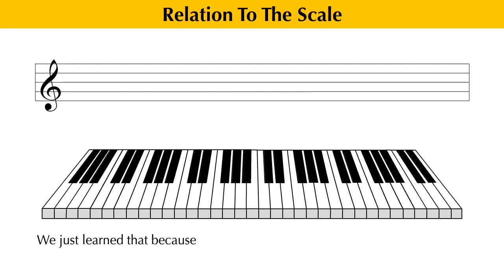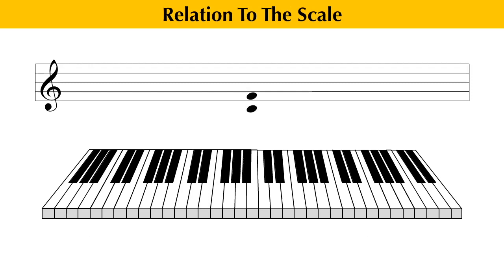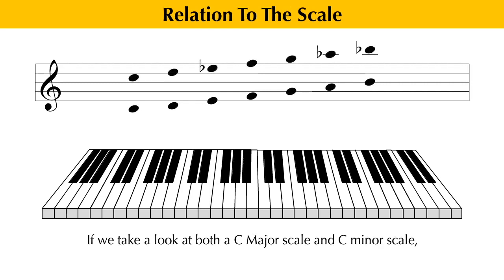We just learned that because they are separated by five consecutive half steps, the distance between the notes C and F is an interval of a perfect fourth. If we take a look at both a C major scale and a C minor scale, we can see that the fourth note in both scales is in fact F natural.